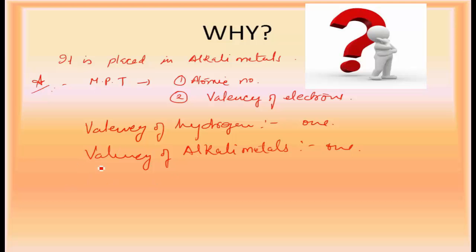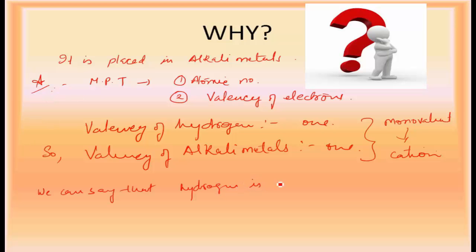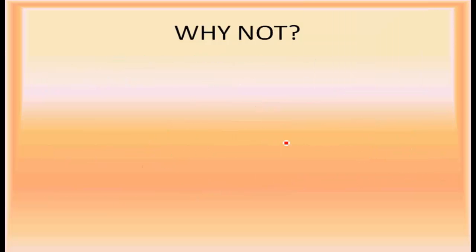Both hydrogen and alkali metals are monovalent, meaning they form a monovalent cation. This similarity means hydrogen is kept above alkali metals based on electronic configuration. Even though hydrogen also shows some properties similar to halogens, that is only one point of similarity, so it is not placed among the halogens.